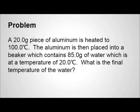A 20 gram piece of aluminum is heated to 100 degrees Celsius. The aluminum is then placed into a beaker which contains 85.0 grams of water which is at an initial temperature of 20 degrees Celsius. What will be the final temperature of the water?